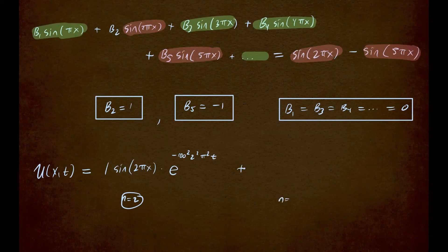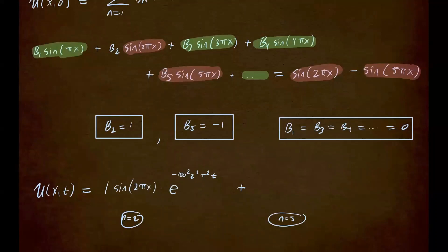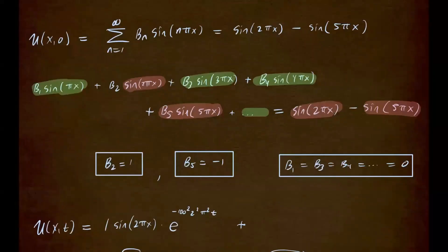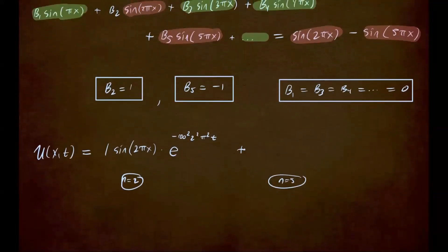2 square pi square times t, plus the next term that we're going to have in our solution is n equals 5. So we'll sub that in into our formula right here. So as you can see, I'm subbing it in right here for n. So our solution only has two terms. So this would be negative 1, because b sub 5 is negative 1, times sine of 5 pi x times e to the negative 100 times 5 square, because n is 5 pi square times t.